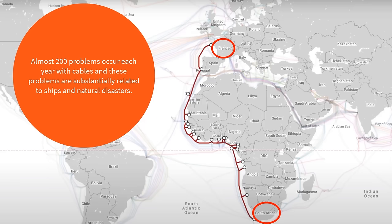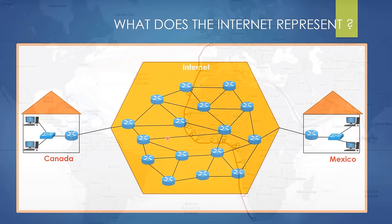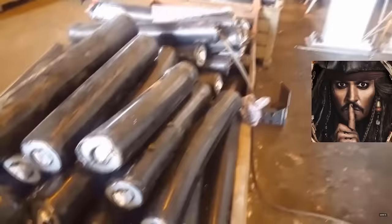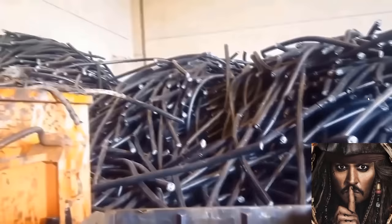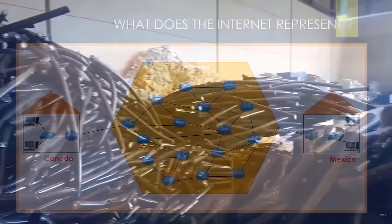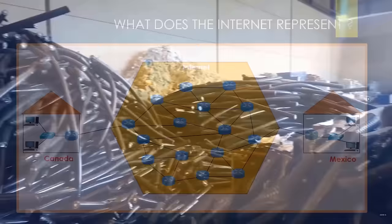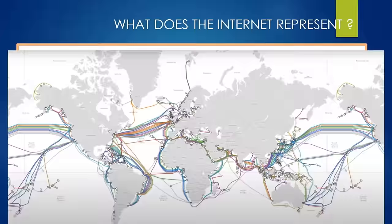Nearly 200 problems are encountered each year, substantially related to ships or natural disasters. There is also a funny reason I used the word 'substantially' — in 2007, sea pirates stole 11 kilometers of a cable connecting Thailand, Vietnam, and Hong Kong to each other, and sold this long cable as scrap by dividing it. I think this event is more surprising than the incredible infrastructure of the internet.